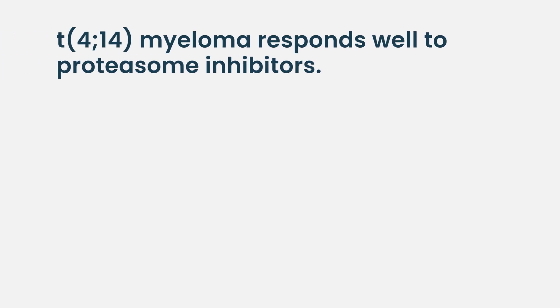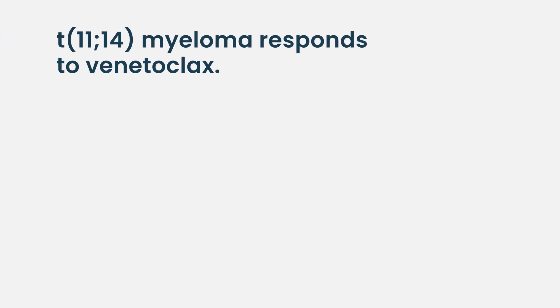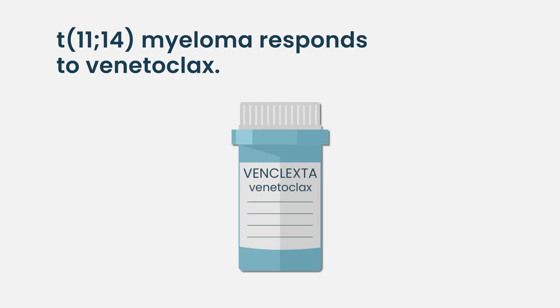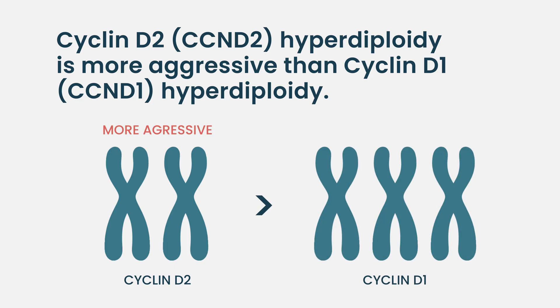These groups are important because they behave very differently. The 4;14 subtype — about 50% of those cases — can be quite aggressive and needs specific treatment, responding well to proteasome inhibition. The 11;14s respond very well to anti-apoptotic therapy with venetoclax. The cyclin D2 type of hyperdiploid tends to be more aggressive than the cyclin D1 type, so there are many nuances within the data that allow physicians to personalize their therapeutic choices.